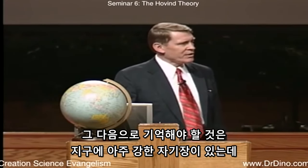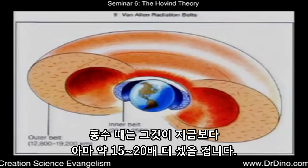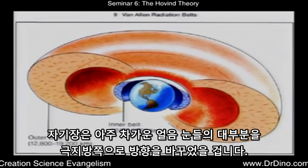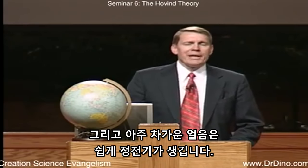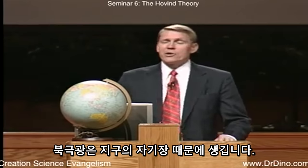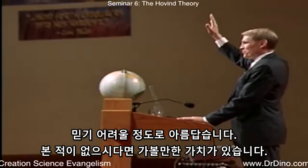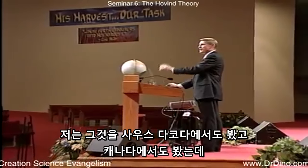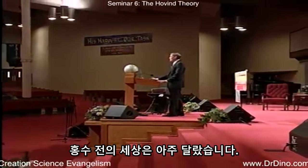The earth has a very strong magnetic field, but it's getting weaker. At the time of the flood, it was probably about 15 to 20 times stronger than today. The magnetic field would deflect super-cold ice crystals to the poles. Super-cold ice is also easily statically charged. The northern lights are caused by the earth's magnetic field — the pre-flood world was very different. The world probably had a canopy of ice or water above the atmosphere.